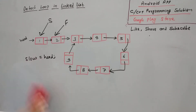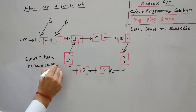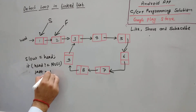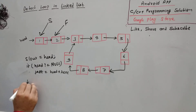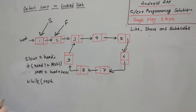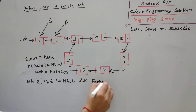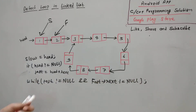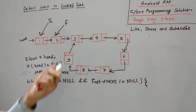So we initialize slow to head and fast to head's next (if head is not null). Then I will run a while loop with the condition: while fast is not null AND fast to next is not null. Inside the loop, before updating, I will check: if fast equals slow, then we break the loop because we know there is a cycle. Otherwise, slow equals slow to next, and fast equals fast to next to next. We don't need to separately check fast to next's validity because the loop condition already guarantees fast to next is not null.